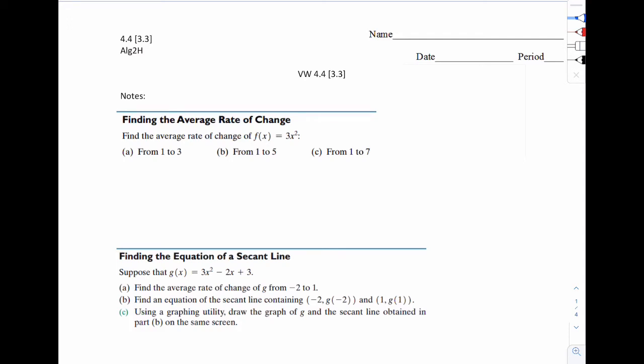Welcome to VW 4.4. Today we're going to be talking about average rate of change, and we're also going to use your calculators. I want you to highlight average rate of change. You're going to be seeing this a lot, and if you ever see this, it's a very fancy way of asking you to simply find the slope. Recall that slope is the change in y over the change in x, so y2 minus y1 over x2 minus x1.